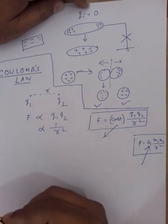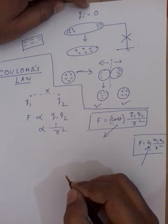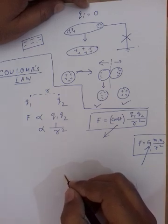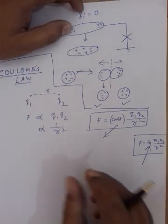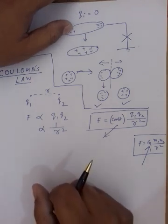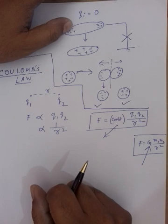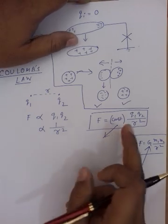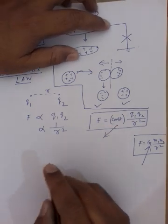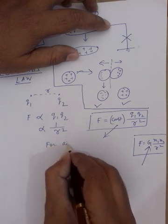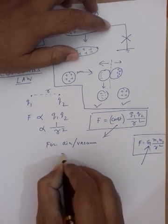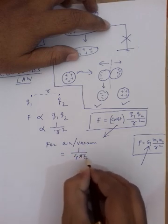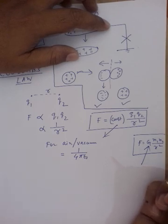For example, if two charged particles are kept in air at some distance and we calculate the force, then place the same two charges at the same distance but with water in between, the force becomes less by nearly 80 times. So in different media the force is different, and the constant is medium-dependent. For air or vacuum — either air present or no medium — that constant is equal to 1 / (4π·ε₀).